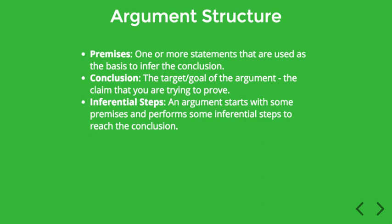In English, the order of these parts is not set in stone. In some cases you might see that the conclusion is actually the first sentence in the paragraph, and then the premises or the reasons are given after. However, once we convert the argument to symbolic notation, we'll always list the premises first, then the inferential steps, and finally the conclusion — putting it in a more standard format. That's another reason why we use symbolic notation when we're doing logic.